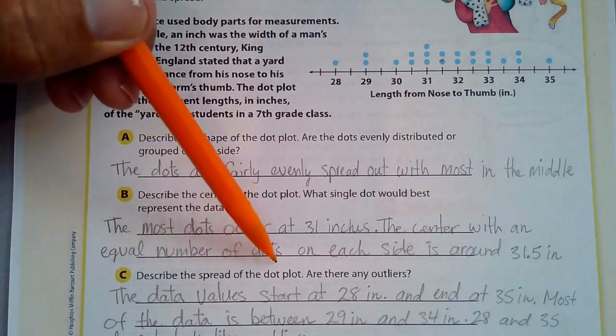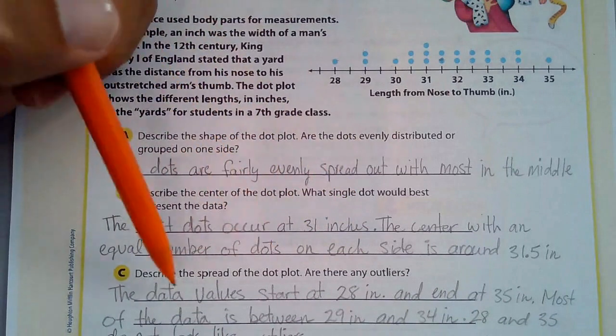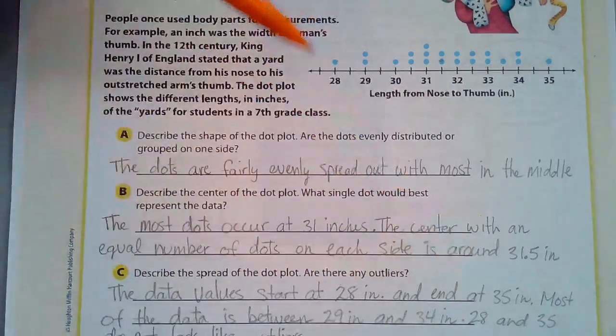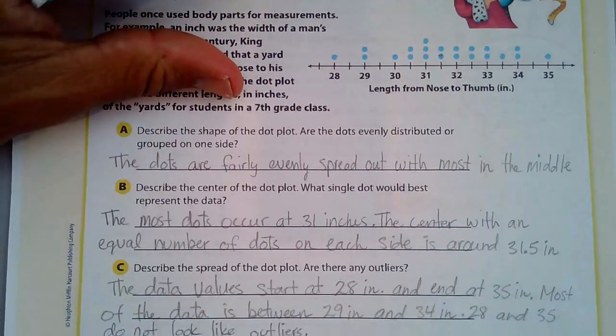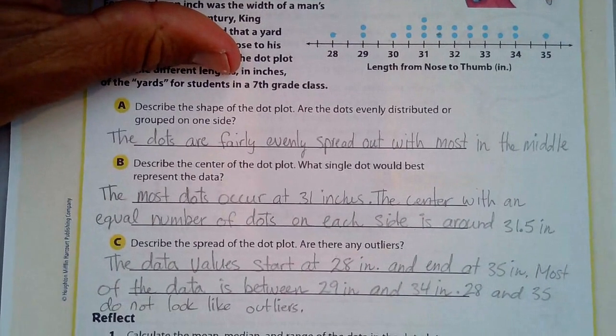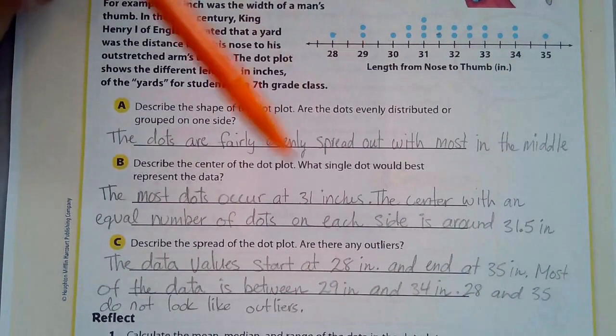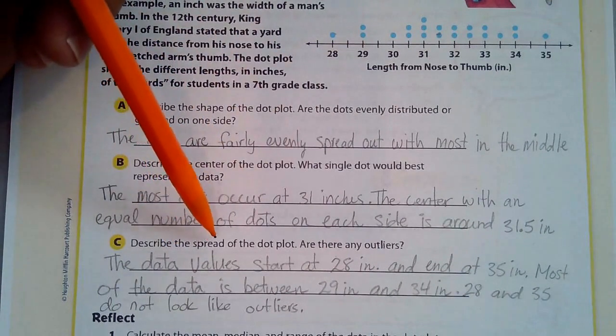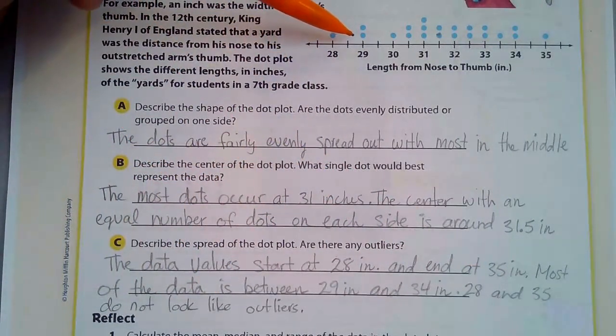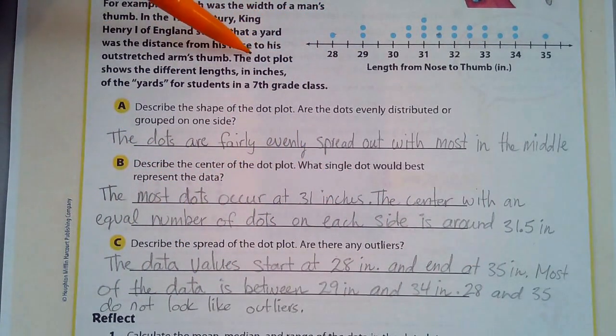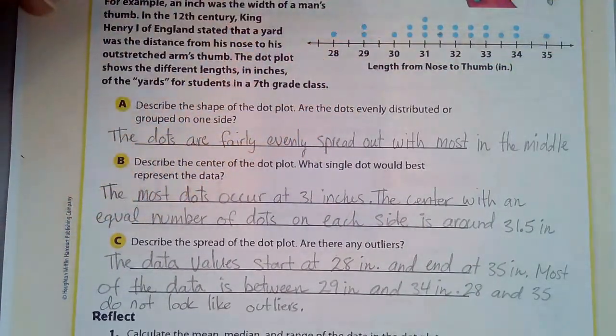Describe the spread of the dot plot. Are there any outliers? The data values start at 28 and end at 35, and we can see that here, 28 to 35. Most of the data is between 29 and 34. Between here, that's where most of the data is, and that's the spread of that. 28 and 35 do not look like outliers. Outliers are data points that are really just way far out, like maybe if you had something at 15 or you had something at 45. Something like that. Those might be outliers.